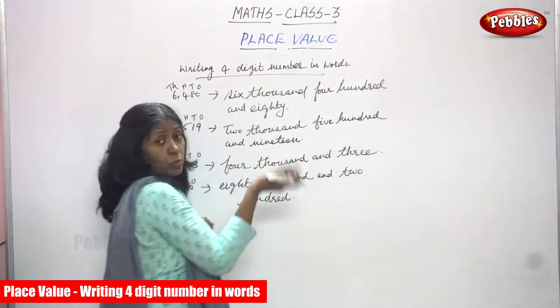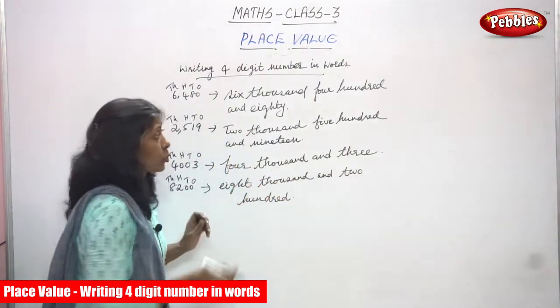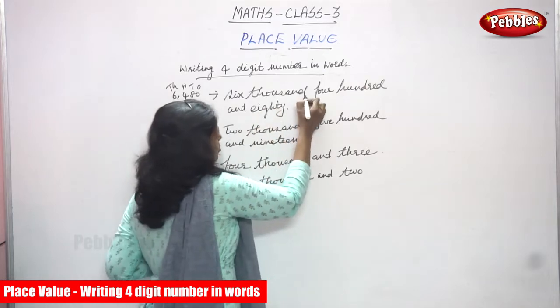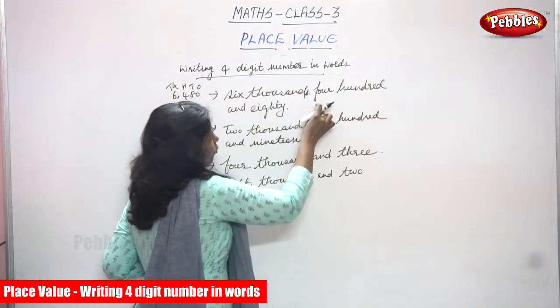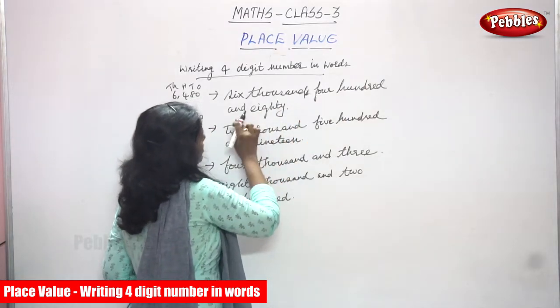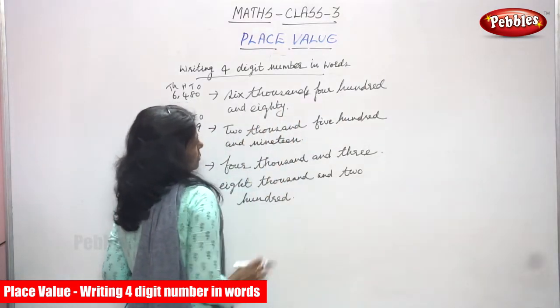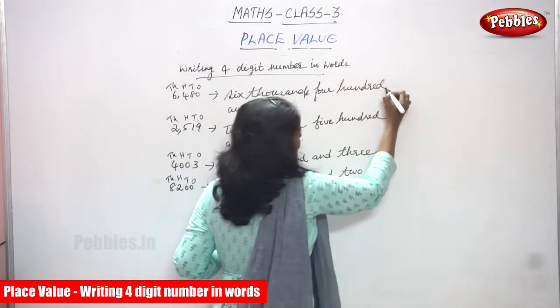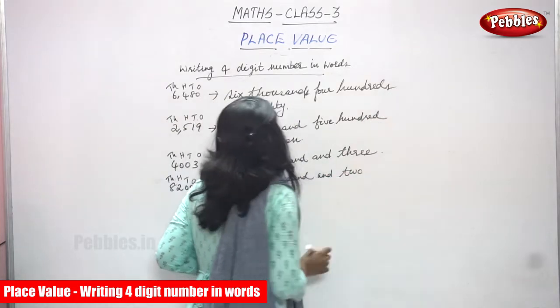So that is 6480. You know how to write. So you have to write like this: six thousands, four hundred and eighty. Six thousand and four hundred and eighty.